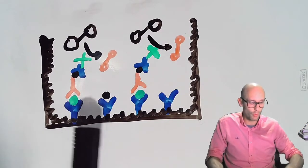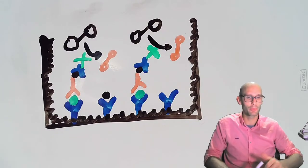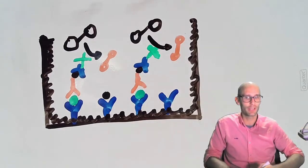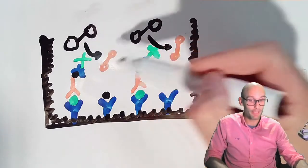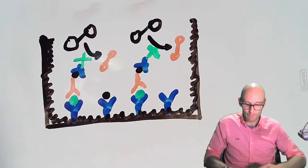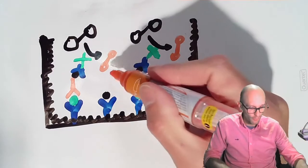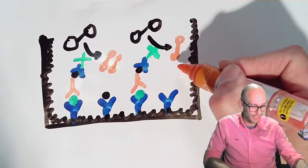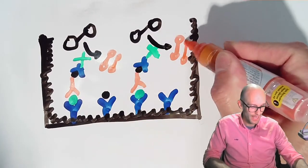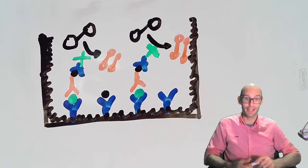So even if we've got very small numbers of interleukin 1 betas, so we have a small number of detection antibodies, because this enzyme can just keep going, we can keep producing more and more of this colored product from the colorless substrate. And this is where the detection part comes in.